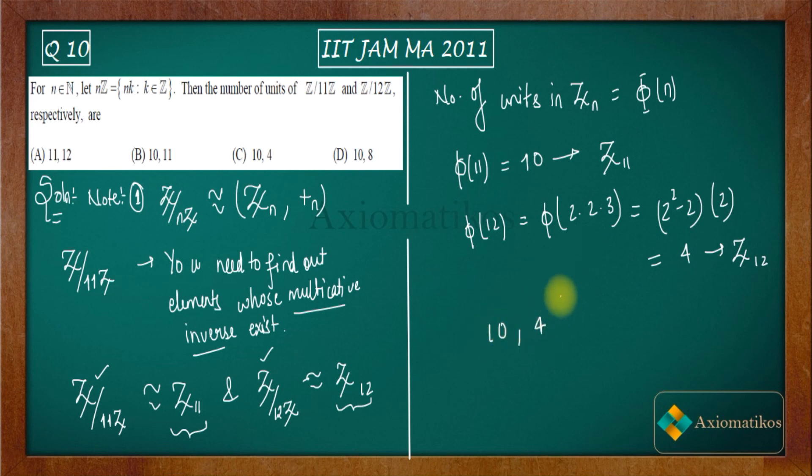So what will be your answer? Your answer will be 10 comma 4, that means C will be your answer. This is how we can solve this question, a very easy question. So C is the correct one, D incorrect, B incorrect, and A incorrect.